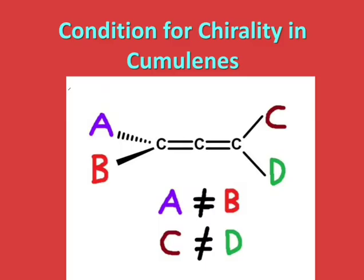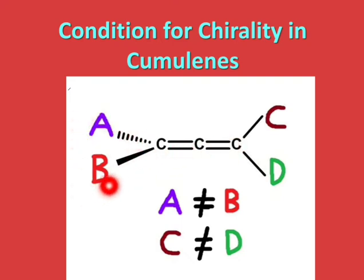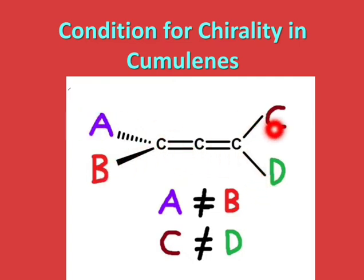Let us understand the condition for chirality in cumulenes. Here you can see this is the cumulene with even number of double bonds, i.e. two double bonds. Accordingly, these four groups — group A, B, C, and D — will be in perpendicular planes: group A and B in one plane, and group C and D in another plane perpendicular to it. The condition for chirality in cumulenes is that the groups on either side should not be the same — group A and B should not be the same, and also group C and D should not be the same. If they are the same, then a plane will pass through the molecule and it will become achiral.